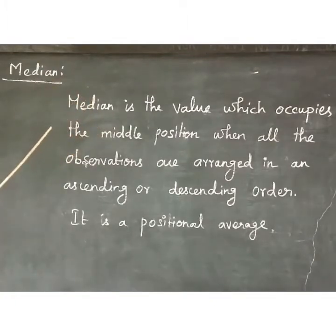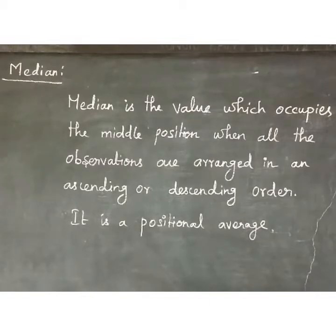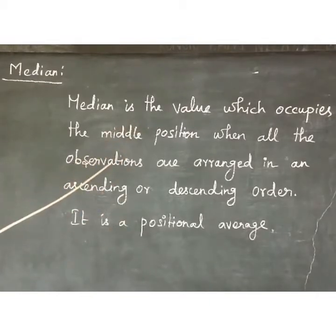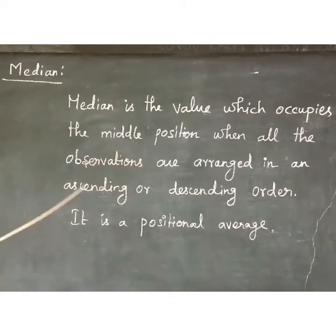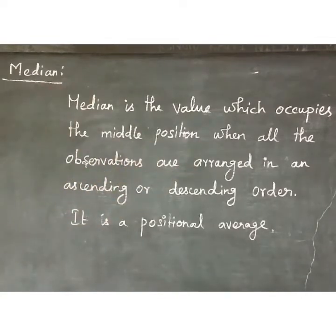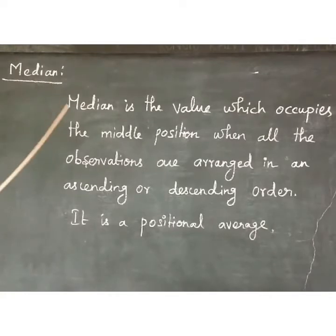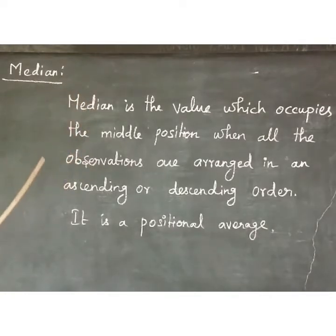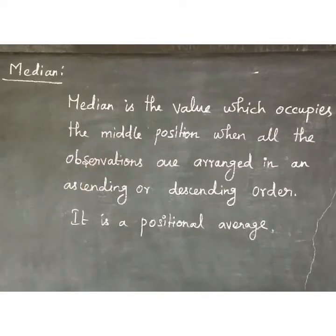Median is the center value of the given data. All the observations are arranged in ascending or descending order. First, put the given data in ascending order — arrange in ascending order.